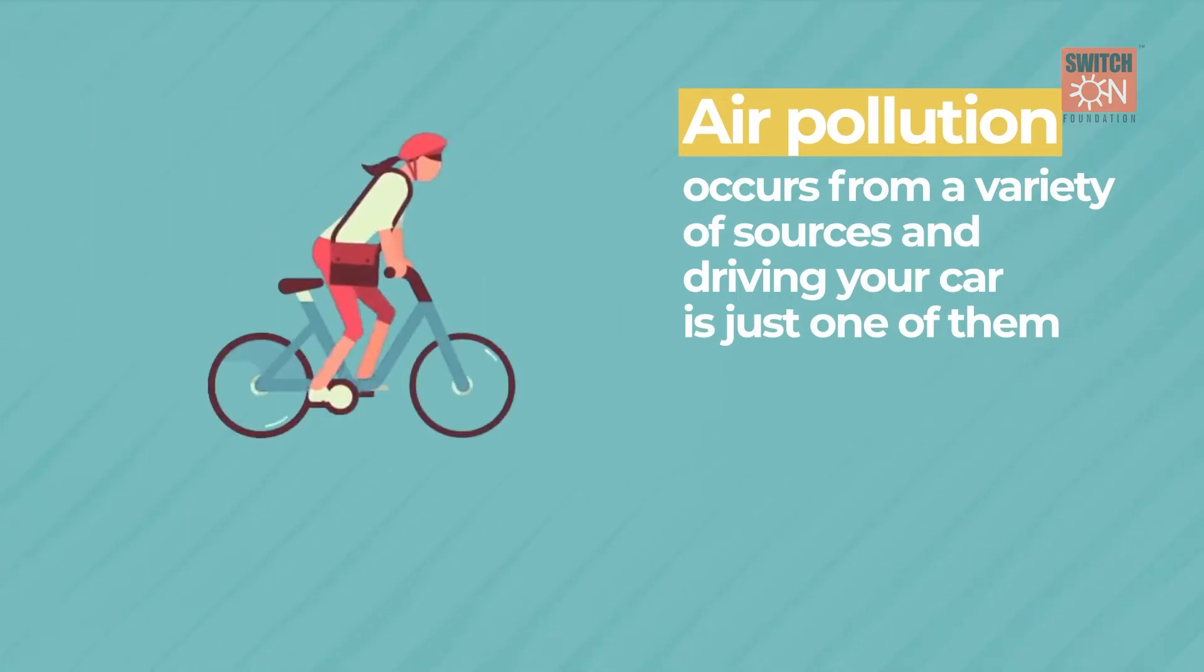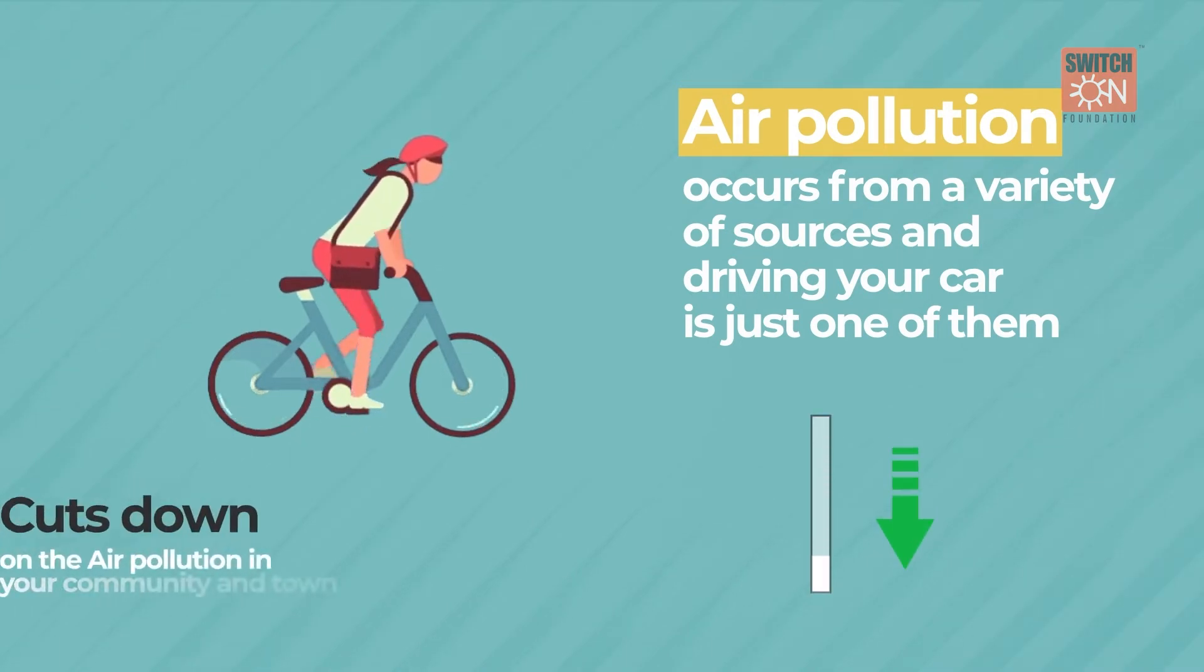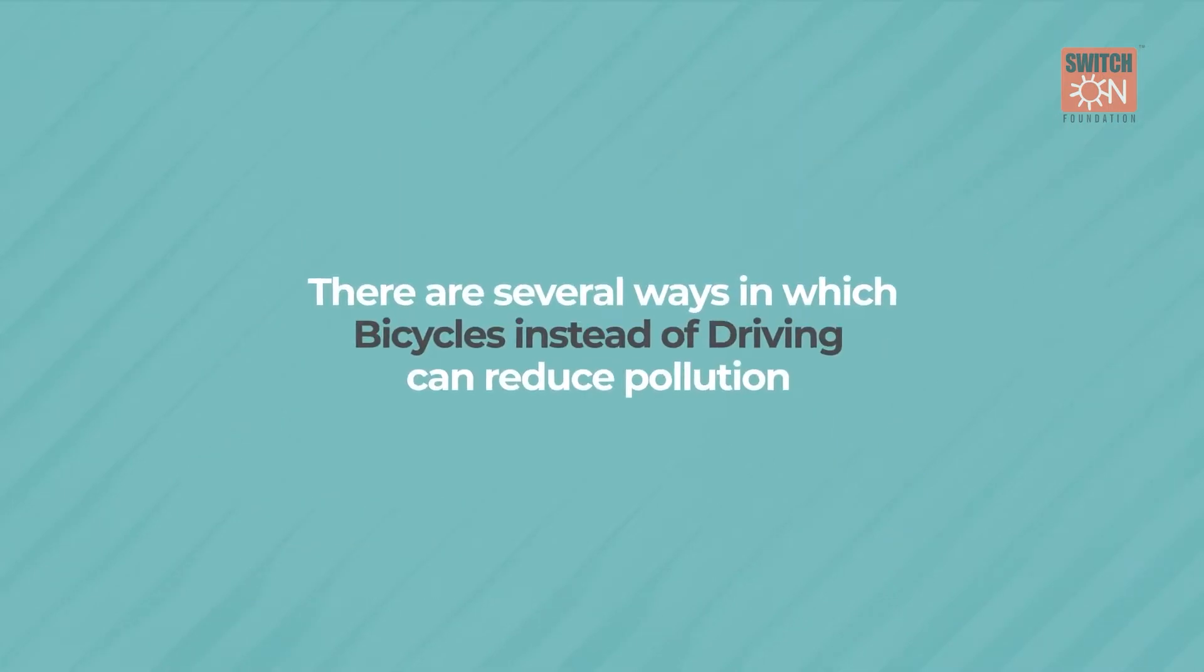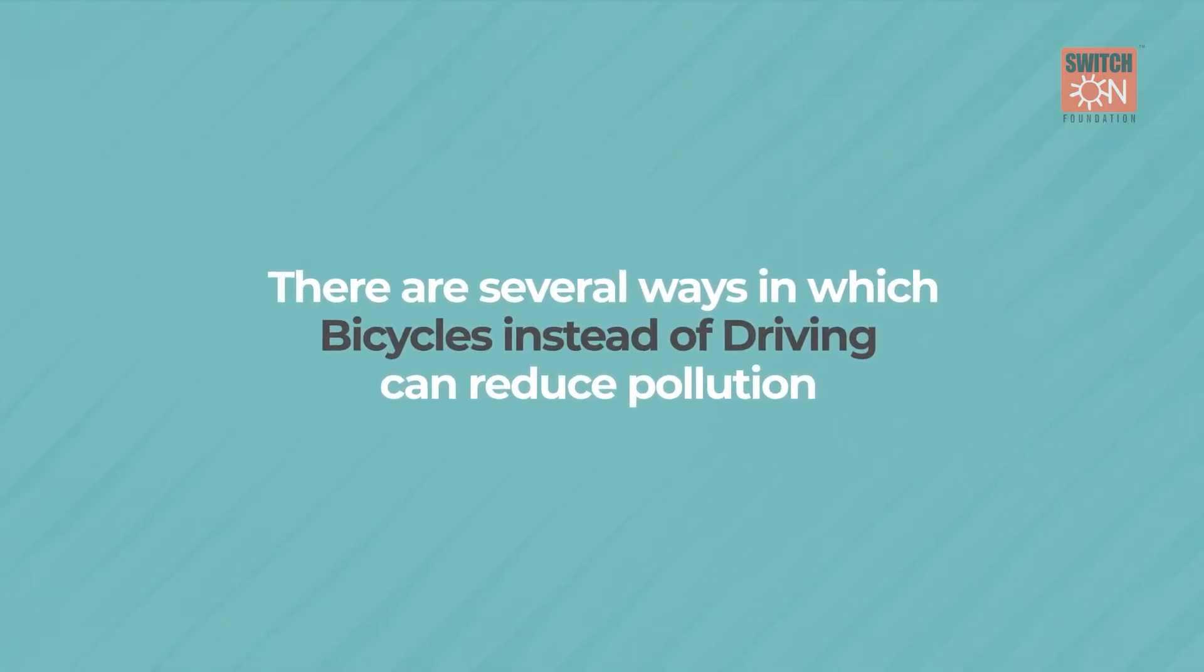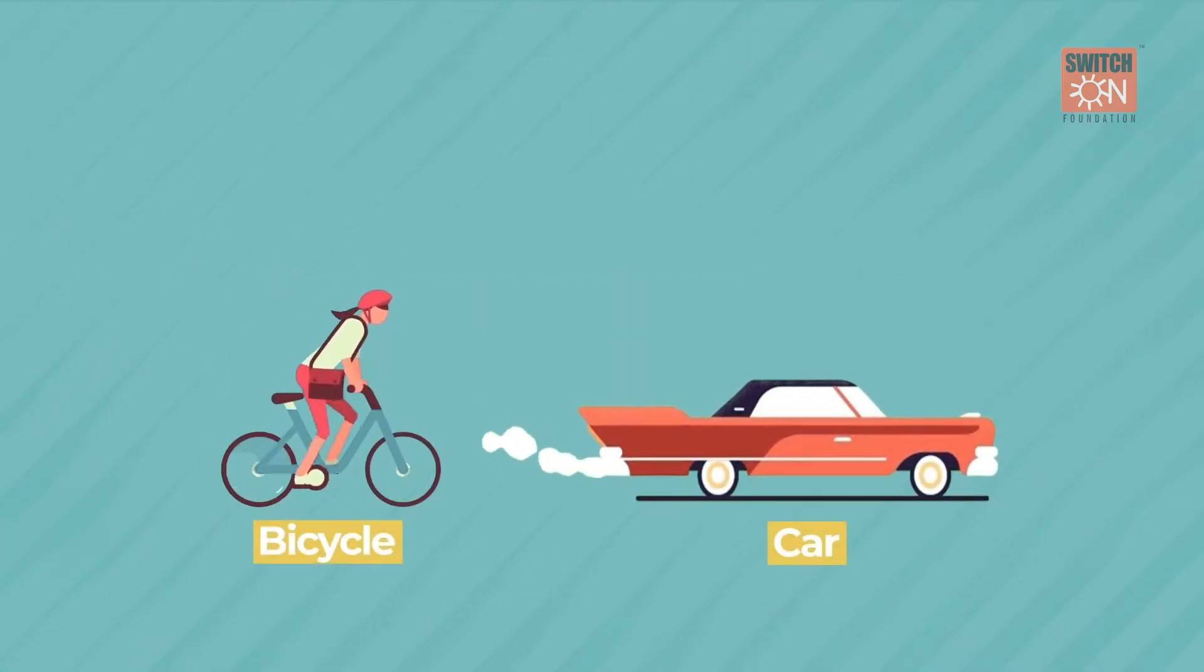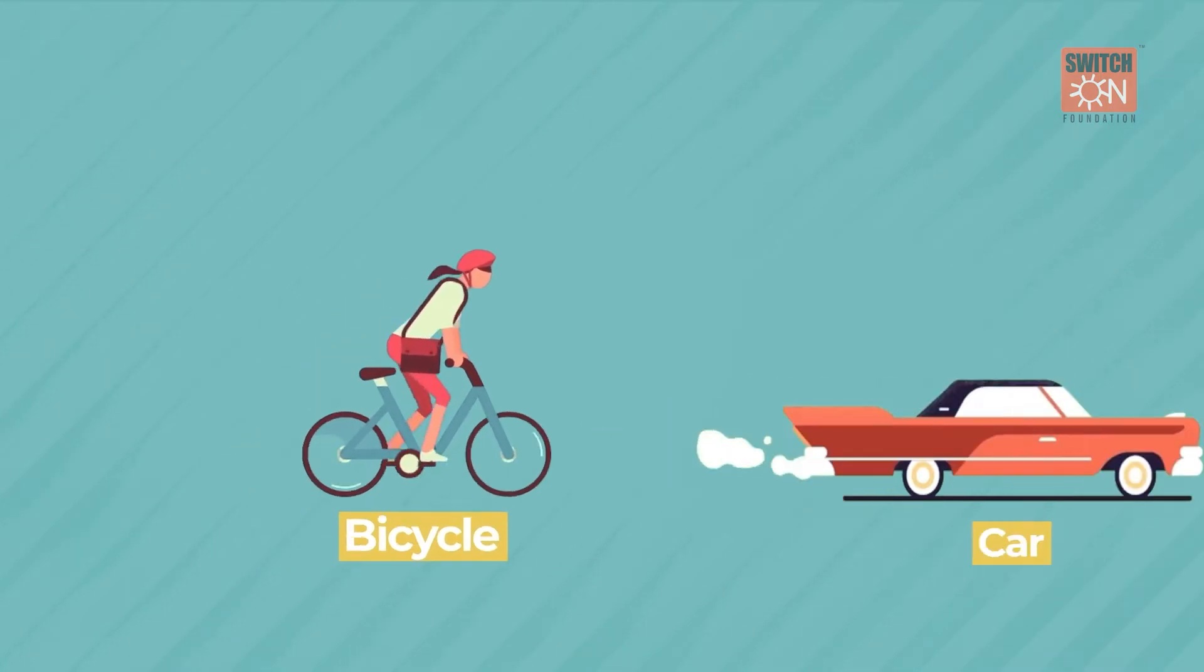Each time a person chooses their bicycle over a vehicle, it cuts down on the air pollution in your community and town. There are several ways in which bicycles instead of driving can reduce pollution, and once you know the reasons, you will be much more inclined to choose your bicycle over your car.